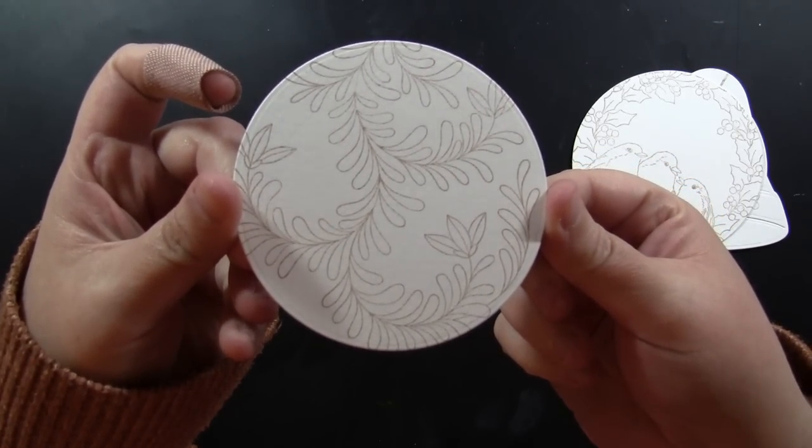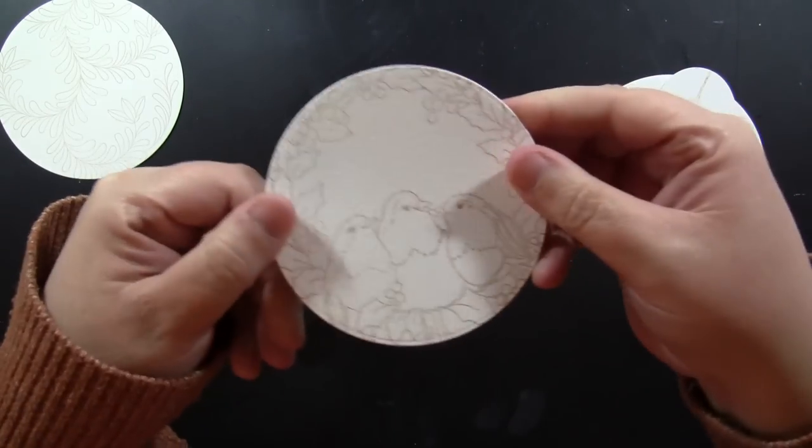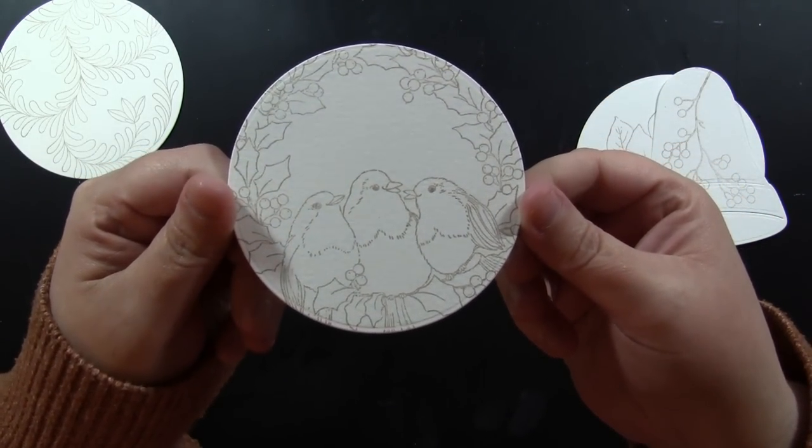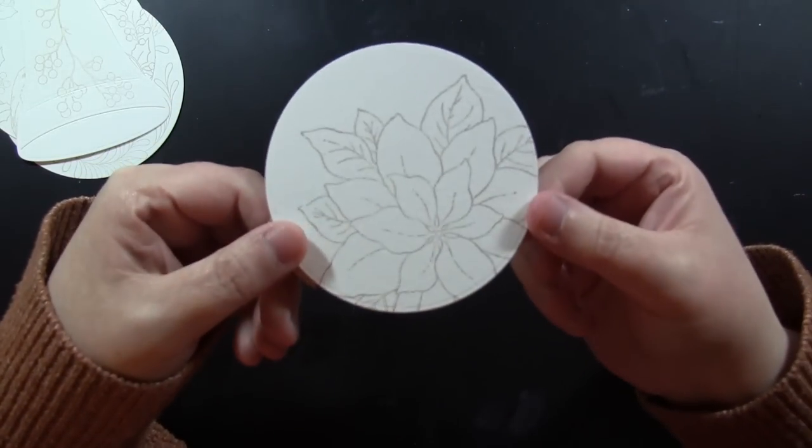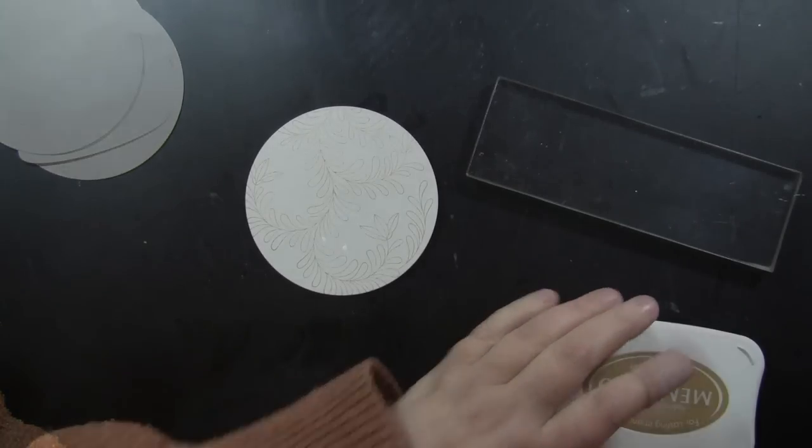So I went ahead and stamped all of my ornament pieces and also that bell as a variation using Memento Toffee Crunch ink. So I'm working assembly line style. I have my pieces already die cut and ready. Then I do all of my stamping and that will be ready for me to do my painting.